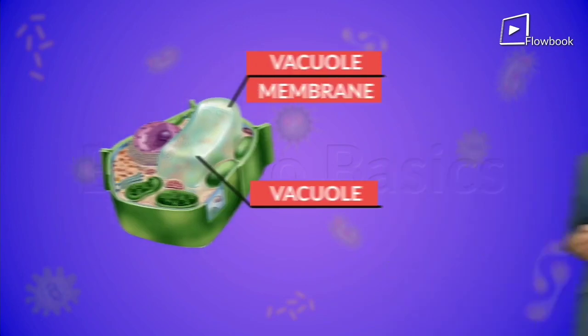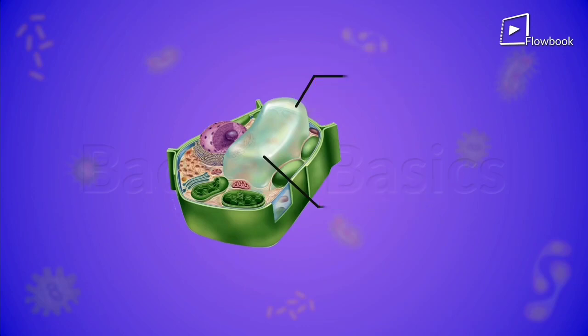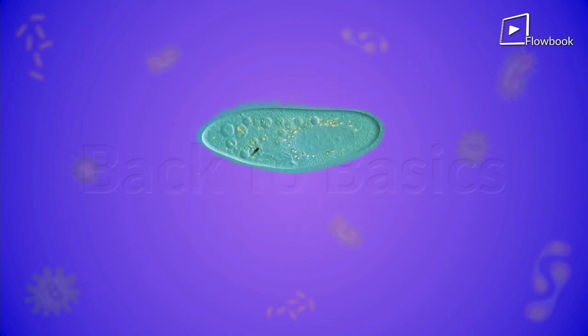This vacuole is covered by a membrane called the vacuole membrane. This membrane is basically what separates the vacuoles from the cytoplasm. Generally, the vacuoles are much larger in plant cells than in animal cells. These are the vacuoles inside of paramecium.